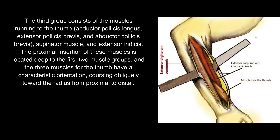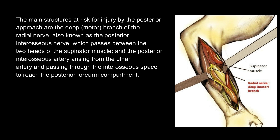The third group consists of the muscles running to the thumb: abductor pollicis longus, extensor pollicis brevis, and abductor pollicis brevis, supinator muscle, and extensor indicis. The proximal insertion of these muscles is located deep to the first two muscle groups, and the three muscles for the thumb have a characteristic orientation, coursing obliquely toward the radius from proximal to distal. The main structures at risk for injury by the posterior approach are the deep motor branch of the radial nerve, also known as the posterior interosseous nerve, which passes between the two heads of the supinator muscle, and the posterior interosseous artery arising from the ulnar artery and passing through the interosseous space to reach the posterior forearm compartment.